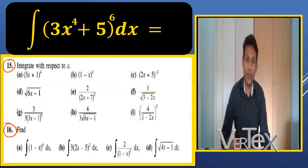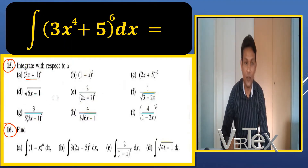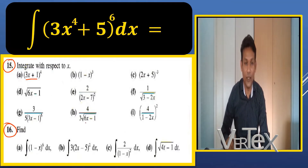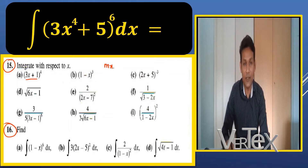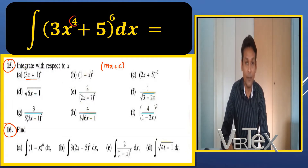This is the second phase of integration. Observe one thing here: 3x plus 1, 1 minus x, 2x plus 5, 6x minus 1, 2x minus 7. When you observe all these questions, you will notice that inside the bracket you have mx plus c — meaning the power of x is not more than one. But in our opening question, the power is 4.